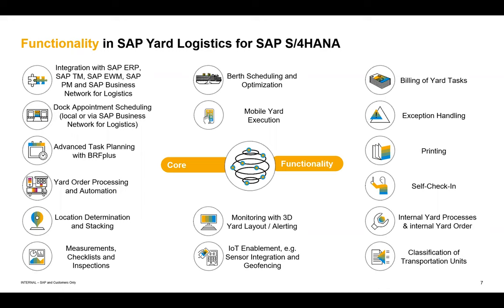Yard order processing automation is also important. The yard order is our main document in yard logistics, and with automation you can have automatic creation, activation, and completion of yard orders — all status steps can be automated. Advanced yard order handling also allows you to change yard orders very flexibly after check-in or after check-out activation, with few restrictions. Location determination and stacking is relevant especially for container terminals — checking maximum weight levels, stacking height, and finding the right placement for containers.